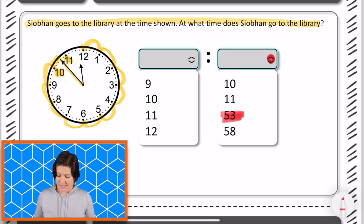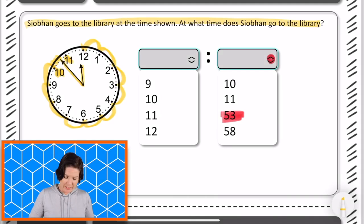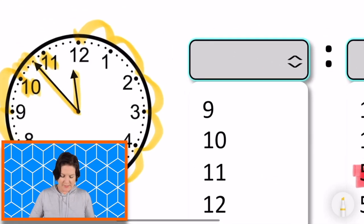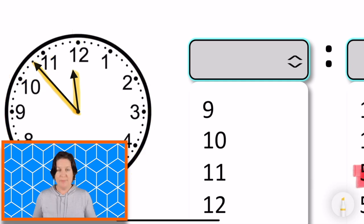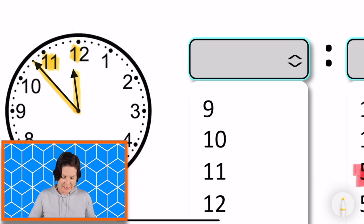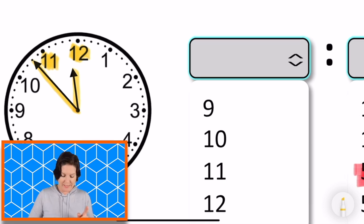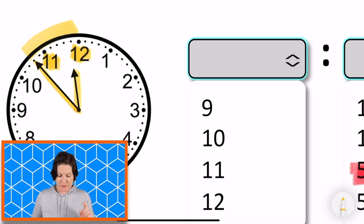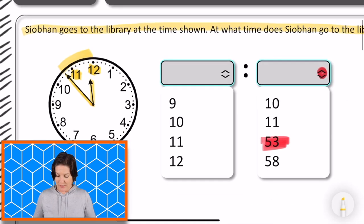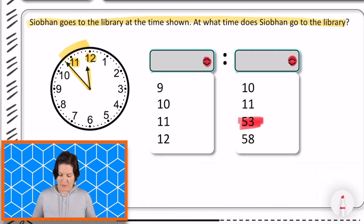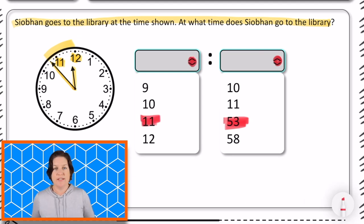Now it's time for our hour hand. This is the hour hand — it is the shorter hand, and we can see it's pointed between the 11 and the 12, and these are between two hours. This means that it's not quite 12 o'clock yet. It's almost 12 o'clock, because when this minute hand continues to go this way, there's only a little bit of time left before the next hour, but this is the hour of 11. It's not quite 12 — it is 11. So I would click the drop-down menu and select 11 on my computer-based test.